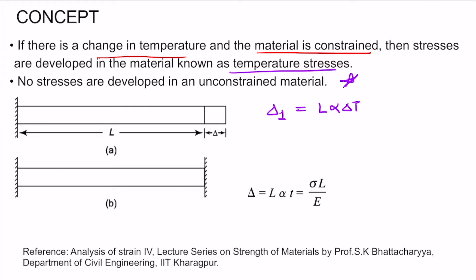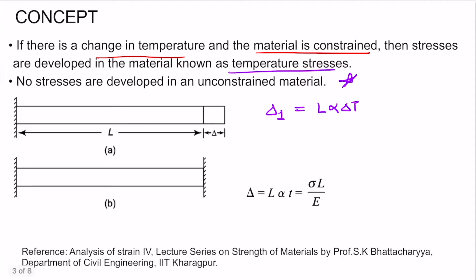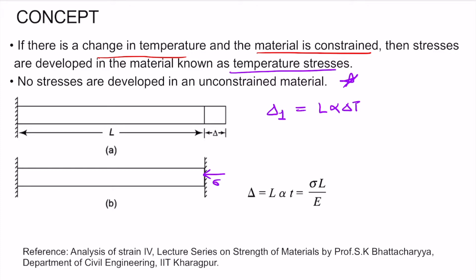Now consider another case where the same bar has supports at both ends and the temperature is increased by delta T. In this case, stress sigma will develop in the bar. The deformation due to stress sigma, called delta 2, will be sigma times L divided by E. To find the value of stress developed, we equate delta 1 and delta 2, giving sigma equal to E times alpha times delta T.